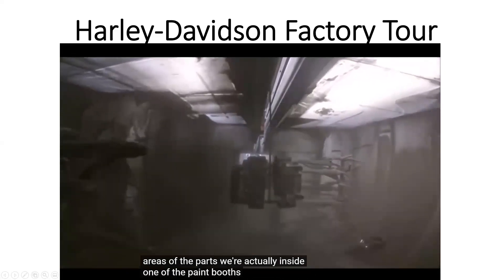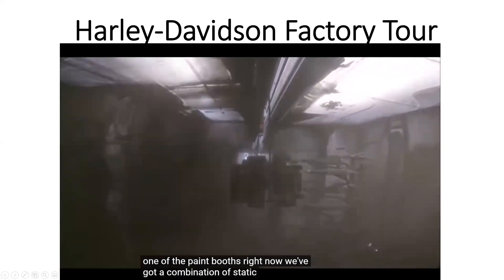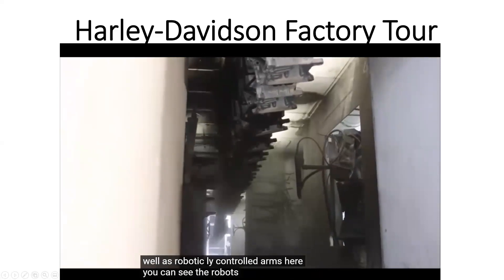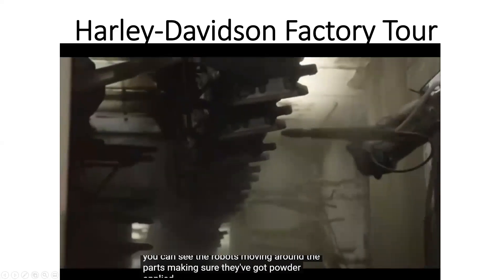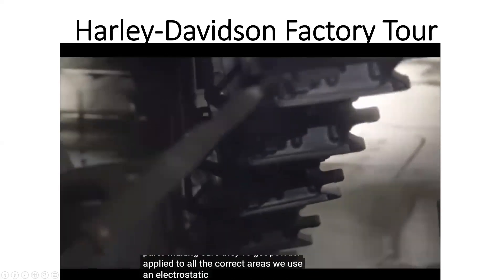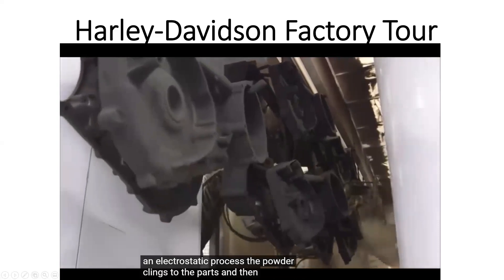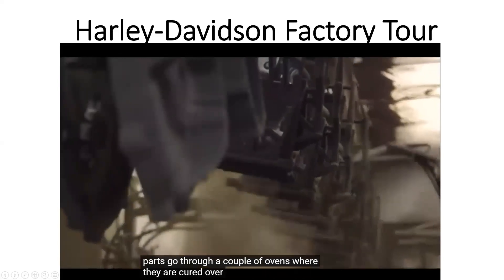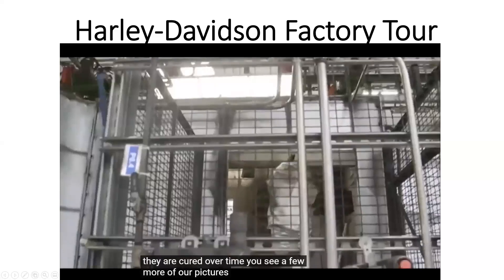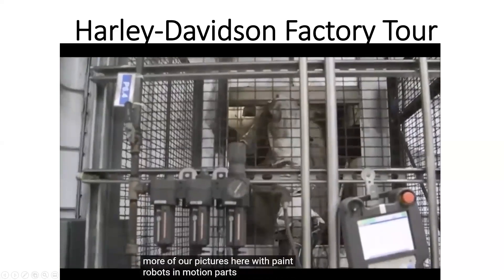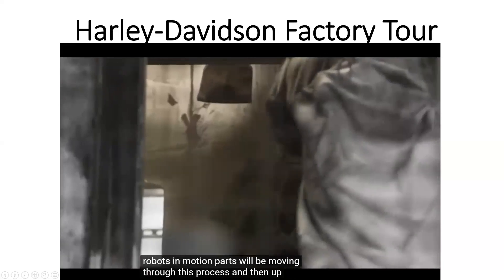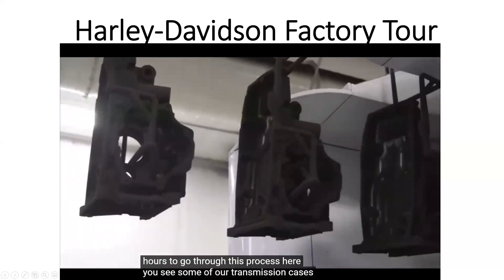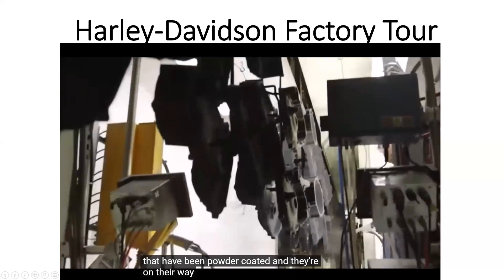We're inside one of the paint booths right now. We have a combination of static guns — fixed mounted guns that spray powder — as well as robotically controlled arms. Here you can see the robots moving around the parts, making sure powder is applied to all the correct areas. We use an electrostatic process so the powder clings to the parts, and then the parts go through a couple of ovens where they are cured over time. This process takes about two and a half hours. Here you can see transmission cases that have been powder coated on their way up to the heat treat.